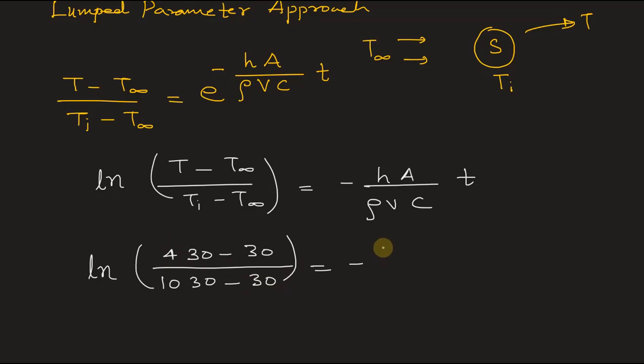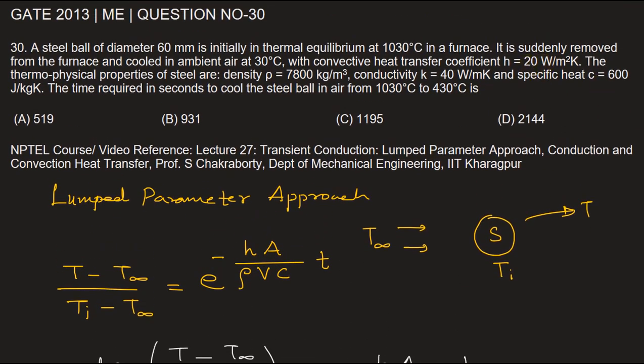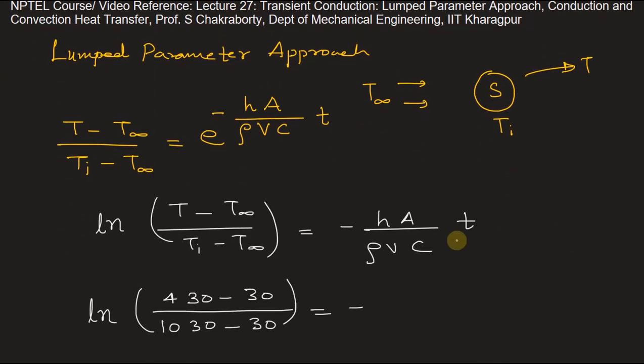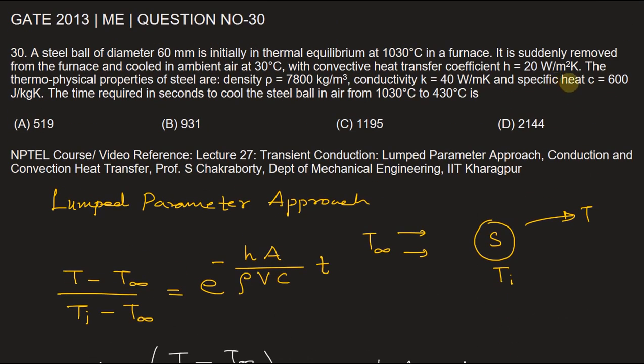The free stream temperature is equal to negative h. In the problem, the value of h is 20 watt per meter square Kelvin. This is 20 and surface area of sphere will be 4πR². In the problem, the value of R is also given. So diameter is 60 millimeters, so R will be 30 millimeter, 0.03 meter.